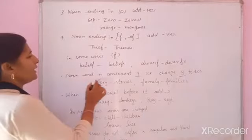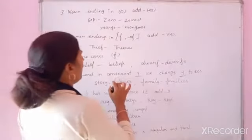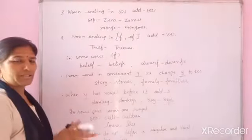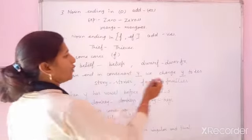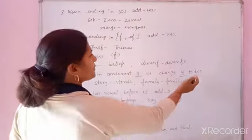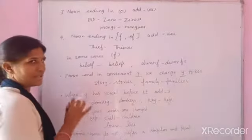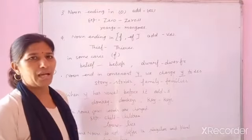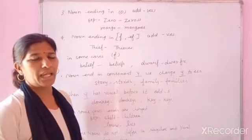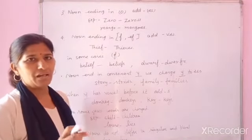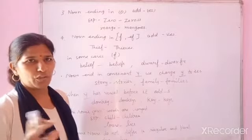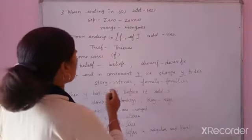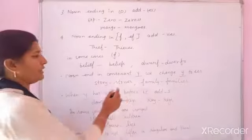Noun ending in consonant plus Y: agar last mein kisi word ke Y ho, to hum usmein I-E-S use karenge. Jaise 'family' — Y ko remove karke I-E-S lagao — 'families'. 'Story' becomes 'stories' — I-E-S use karke.